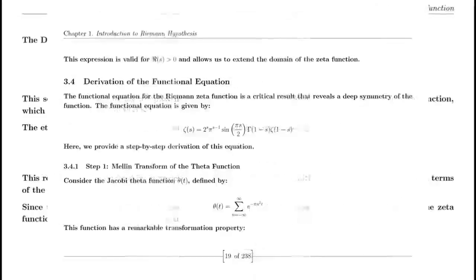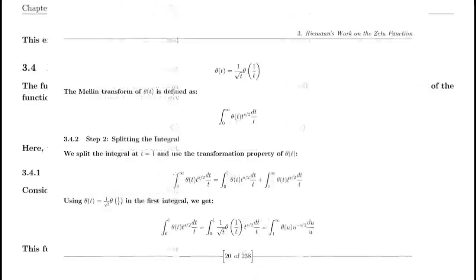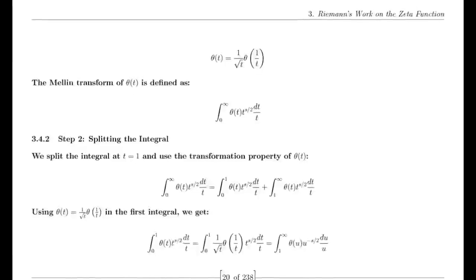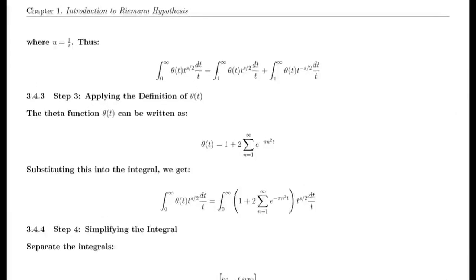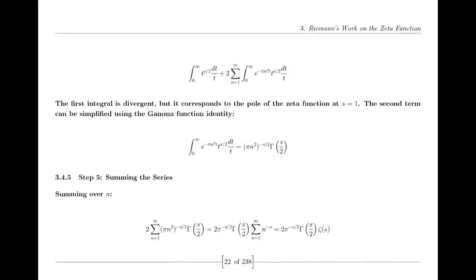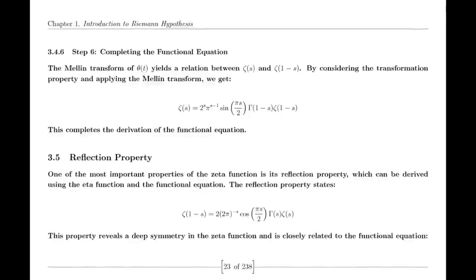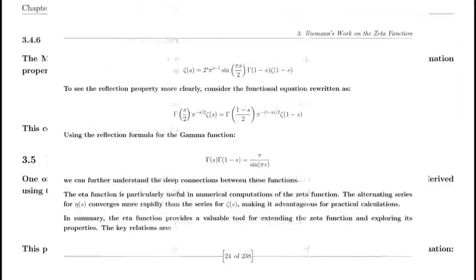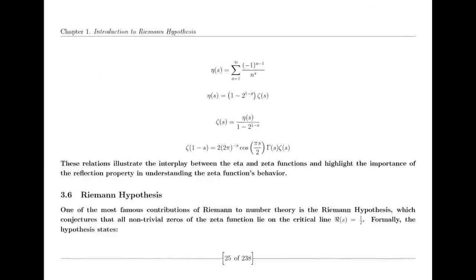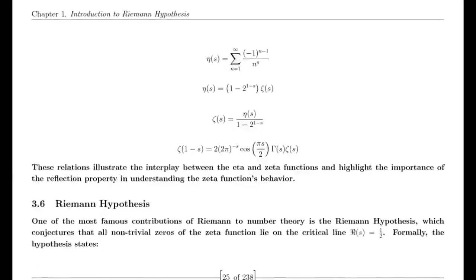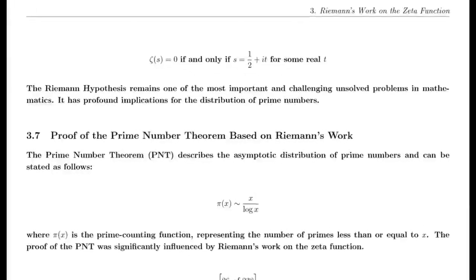These pi/3 or pi/6 angles are particularly noteworthy in the context of the Riemann hypothesis. The Riemann hypothesis concerns the Riemann zeta function and its zeros. According to the hypothesis, all non-trivial zeros lie on the critical line where the real part of s is one-half. If we project these angles onto the complex plane, the unit circle intersects the critical line at specific points corresponding to the pi/3 or pi/6 intervals. These pi/3 or pi/6 angles serve as a bridge between the geometric representation of the unit circle and the analytical properties of the Riemann zeta function.